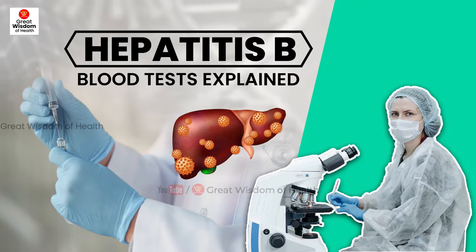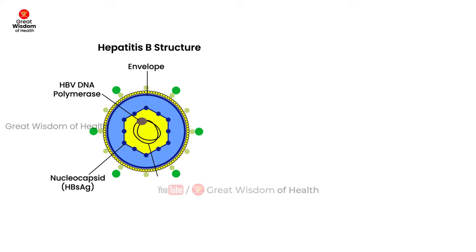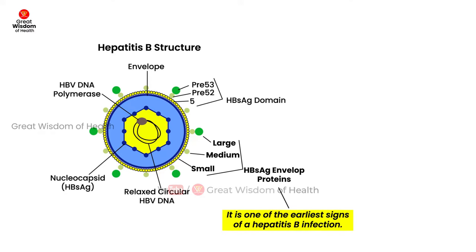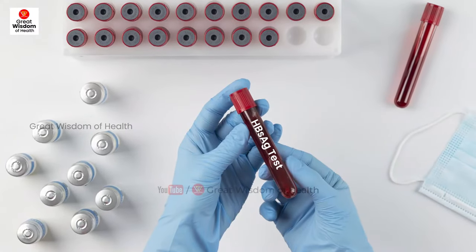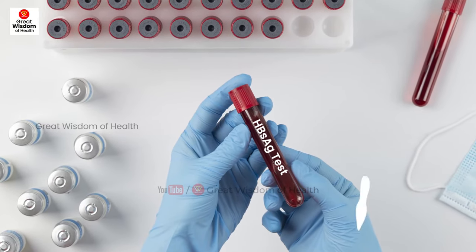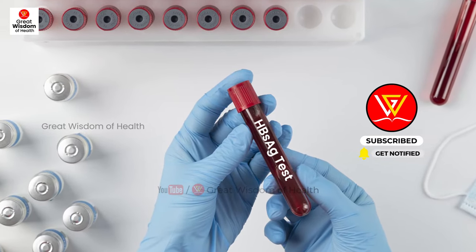Hepatitis B blood tests explained. HBV has proteins called antigens on its surface that cause your immune system to make antibodies. Hepatitis B surface antigen can be found in your blood within several weeks after the infection starts — it is one of the earliest signs of a hepatitis B infection. Hepatitis B surface antigen, also known as Australia antigen, is present on the surface of the hepatitis B virus.